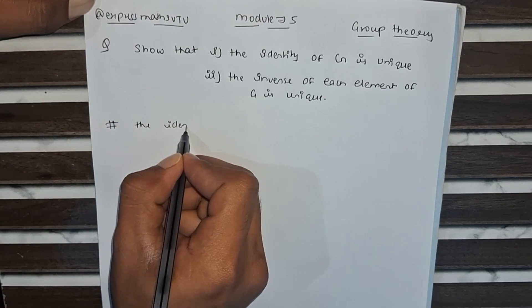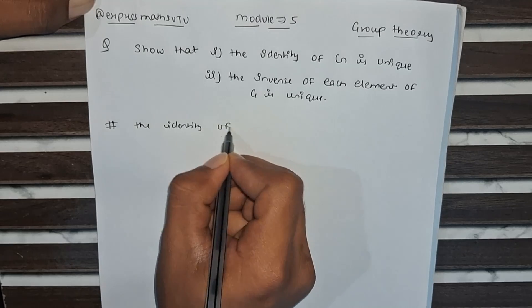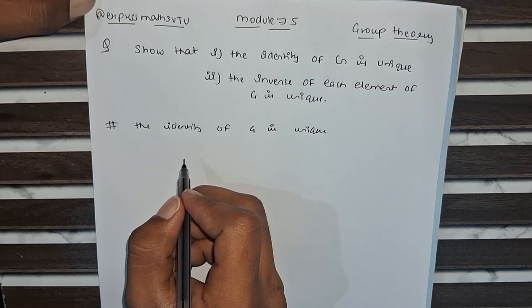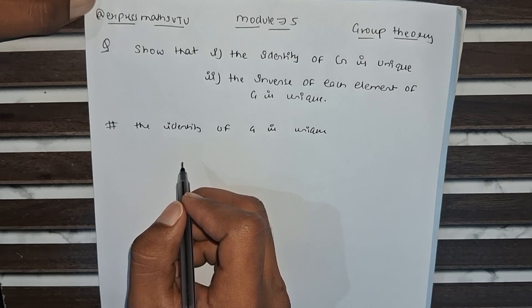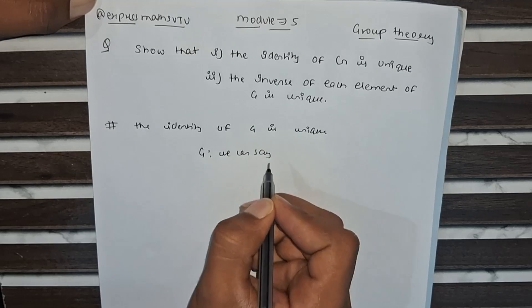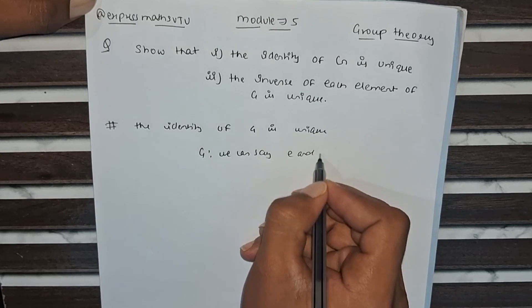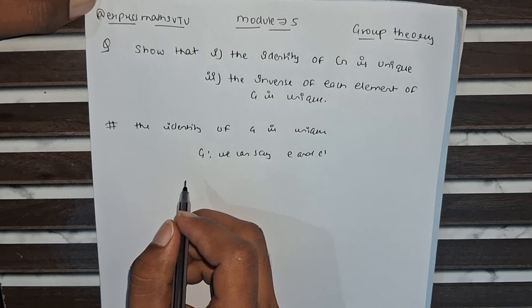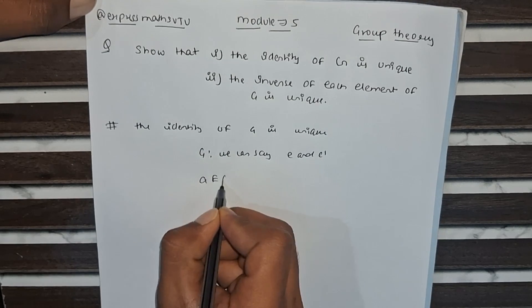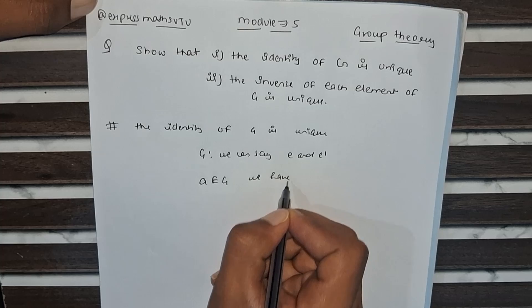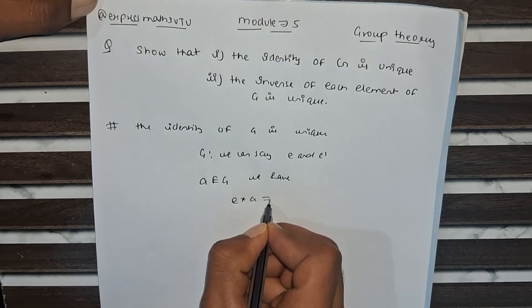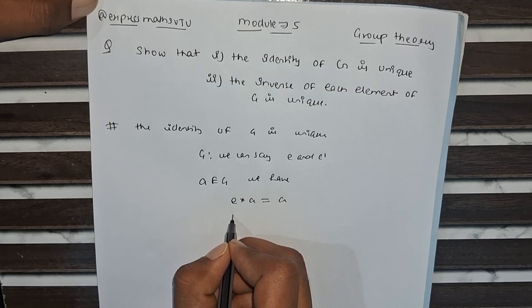Assume there are two identity elements in G, say E and E'. By the definition of identity, for any A belonging to G we have E times A equals A and E' times A equals A.